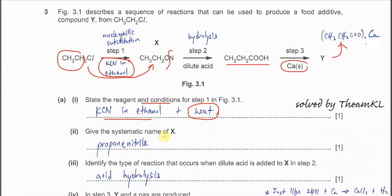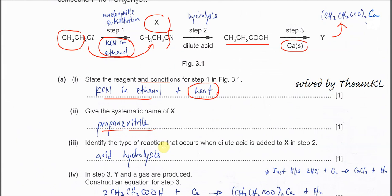Give the systematic name of X. X is very easy. So it has 3 carbon, so it's a propane. This group, we don't say cyanide. Now, we say nitrile. So it's propane nitrile.